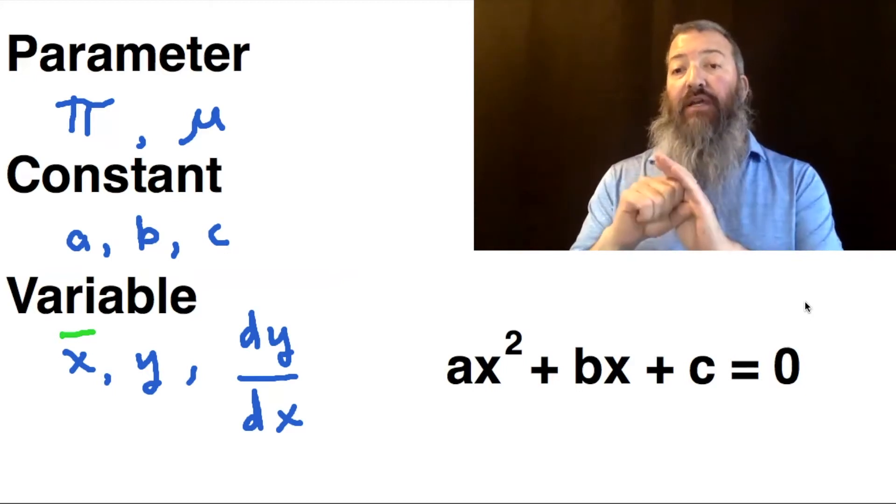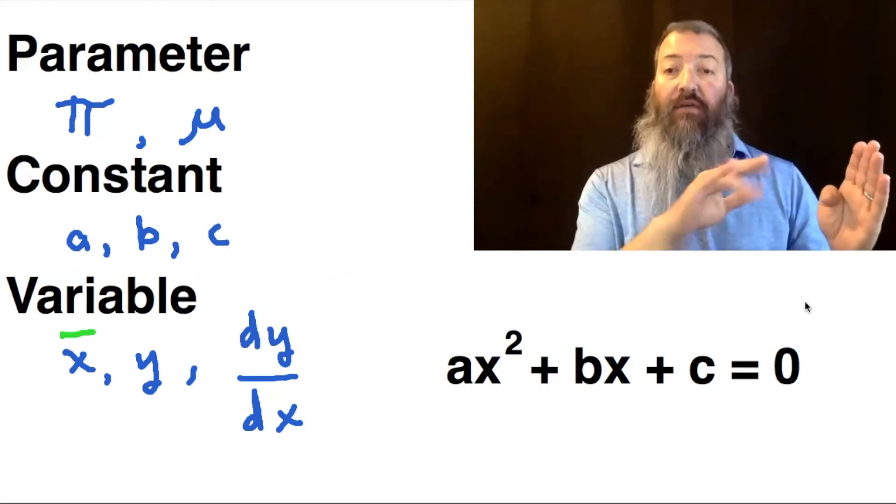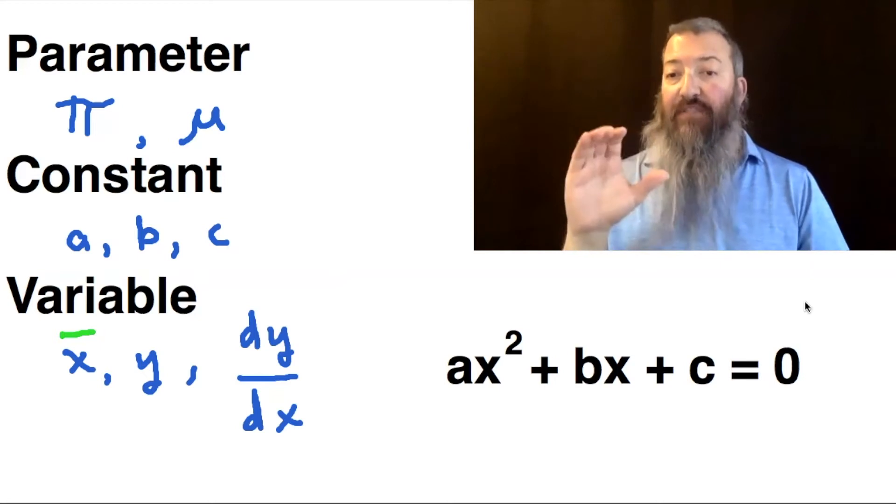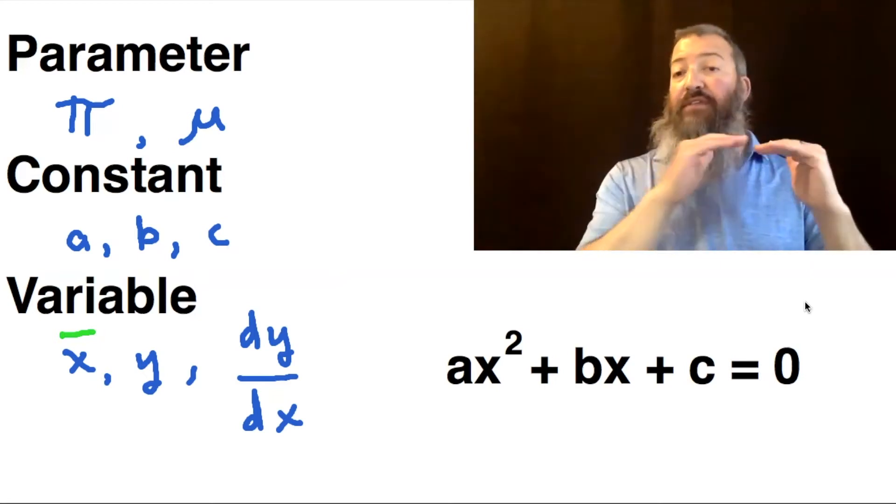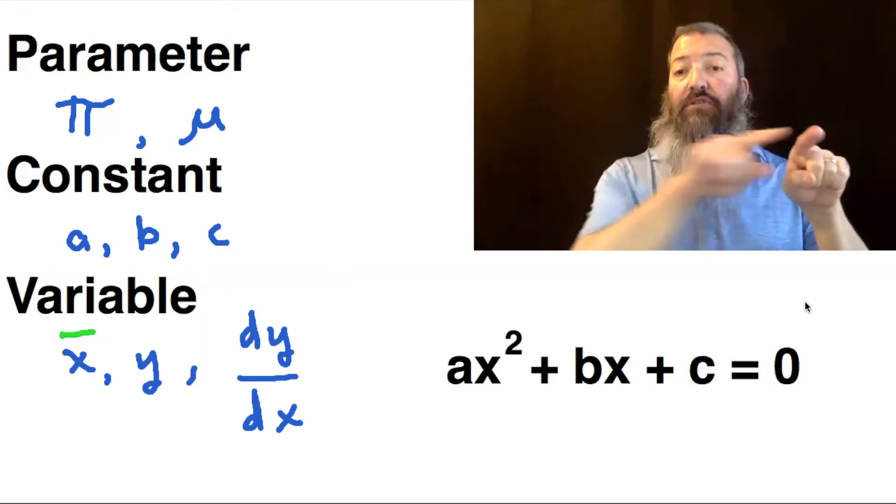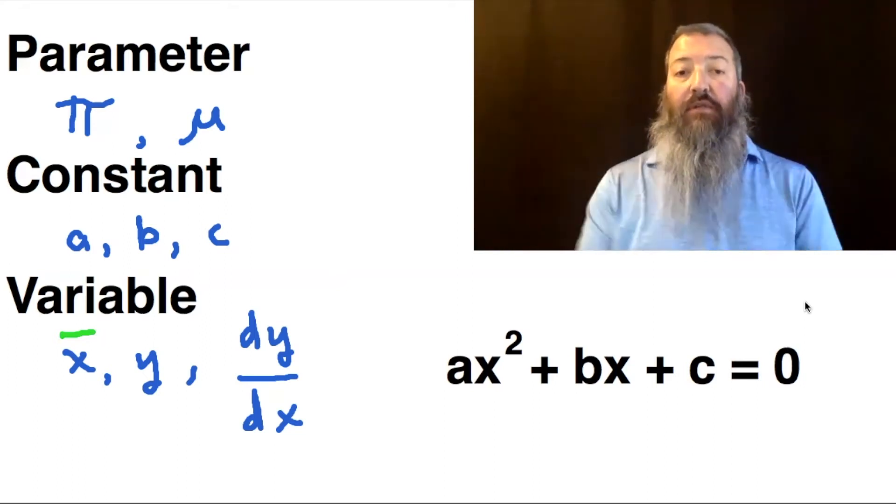Constants are symbolized usually with the beginning of the English alphabet, A, B, C, and so on. And it's just like they sound. They are constant. They don't change. It's a horizontal line on a graph.